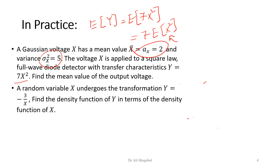The second practice problem: a random variable x undergoes the transformation y = −3/x. Find the density function of y in terms of the density function of x. If you sketch the relation between y and x, this can be treated as a monotonic transformation. Please work this out and write the PDF of y in the comment section.